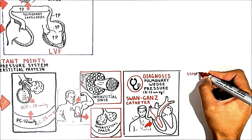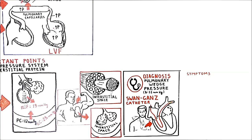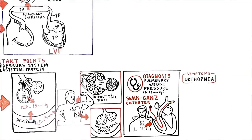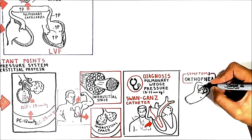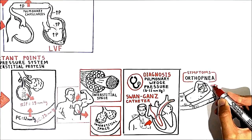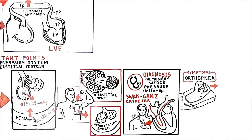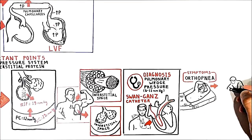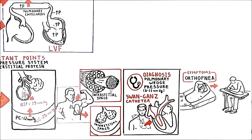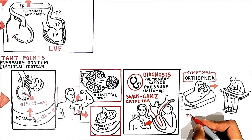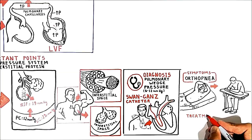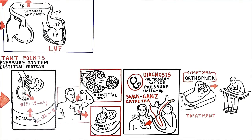The first clinical sign of pulmonary edema due to left ventricular failure is often orthopnea — dyspnea when supine, because the recumbent position causes additional pressure in the lungs. Orthopnea can be reduced or relieved with an upright posture. Regarding treatment, in order to reduce the left atrial pressure, we use diuretics.